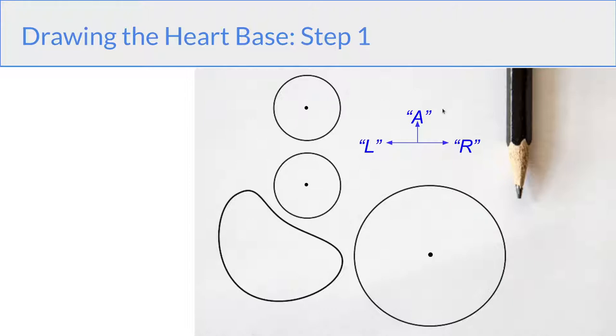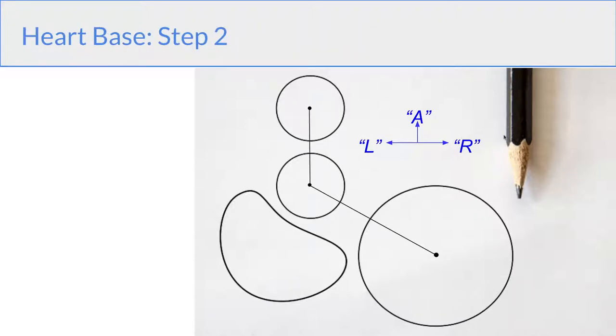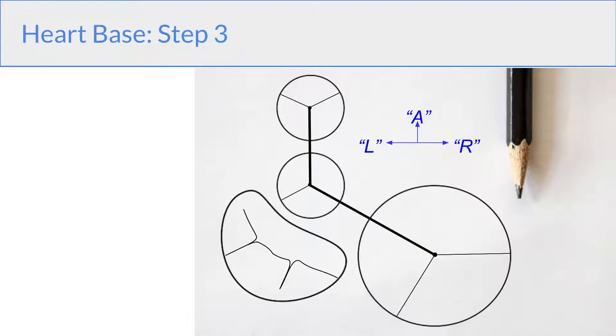So the first step is to draw three circles and mark the centers. So in the center, we have the aortic valve. In front of it, the pulmonary valve and the large circle on the side represents the tricuspid valve. And then we make a jelly bean for the mitral valve. So the next step is to connect the centers of the circles with two lines.